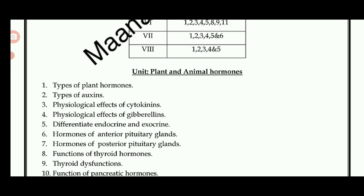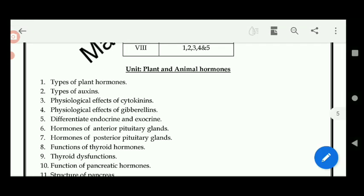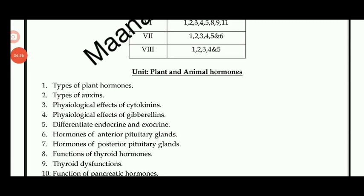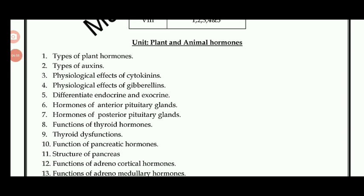Next: plant and animal hormones. Types of plant hormones: auxin, gibberellin, cytokinin. Also moon hormones and Abscisic acid. Topics include types of auxin, physiological effects of cytokinin and gibberellin. The difference between endocrine and exocrine glands is also important.